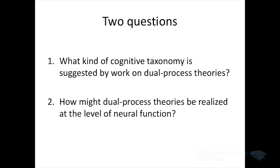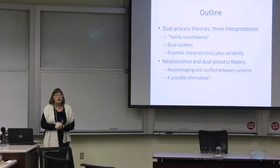My talk is structured — I use that term loosely — around two questions. First, what kind of cognitive taxonomy is suggested by work on dual process theories? Second, how might these dual process theories be realized in the brain? Not to give away the punchline, but the answer to question one is nobody really knows, and the answer to question two is nobody's really thinking about it. At the end of the talk I'll say a little bit about how I think it might be plausible and fruitful to answer these questions.